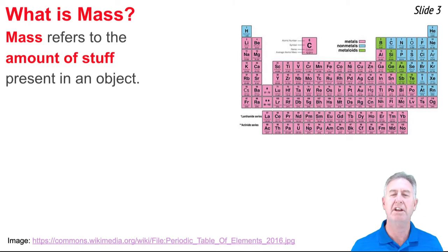So what is mass? I like to think of mass as the amount of stuff present in the object. Objects are made of atoms and there are many different types of atoms. We refer to these as elements.